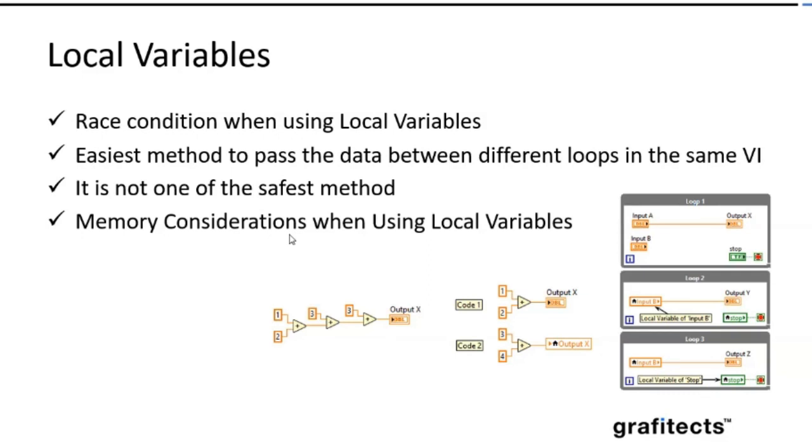And if you are not handling it carefully, if you are reading and writing in multiple places, then it will lead to a race condition. Race condition - I hope everyone, I'll just give you an intro. If you are trying to write in the same terminal or same indicator in multiple places, it will lead to a confusion and it will give you an unexpected results. So that leads to race conditions.